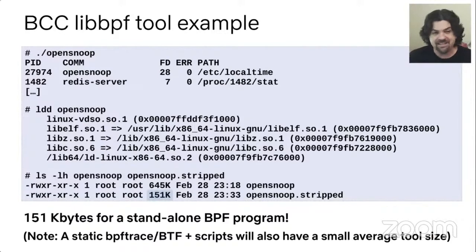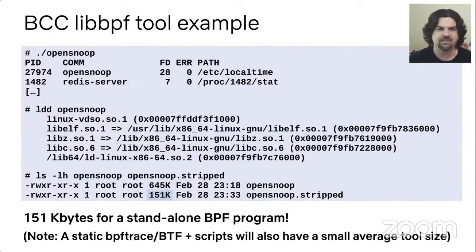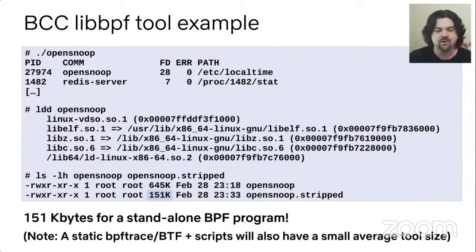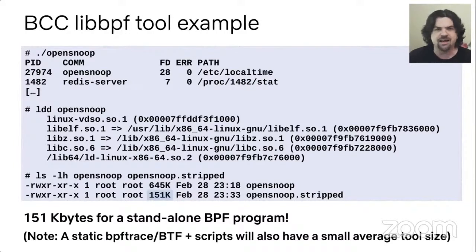The new interface in BCC is LibBPF, and many of you may not have looked at it yet. LibBPF allows us to create standalone binaries that have BPF bytecode embedded. Earlier this year I coded opensnoop — it doesn't use LLVM, and stripped it's 151 kilobytes. Think about that: 151 kilobytes for a standalone BPF performance tool that just runs — you can run this on embedded systems that have storage constraints. For BPFtrace, we're hoping to create a static BPFtrace using BTF (BPF Type Format) so it doesn't need LLVM compilation, making it suitable for embedded environments as well.